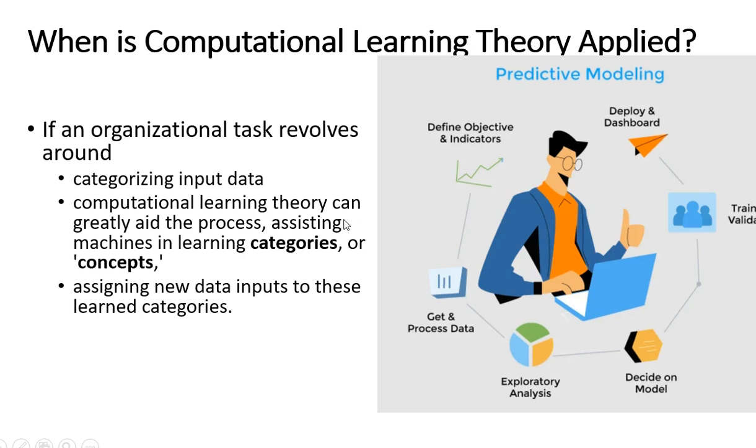Then you can go for computational learning theory because it can aid or assist the process in learning the categories or learning the concepts. So basically COLT will help in assigning the new data points to those learned categories.